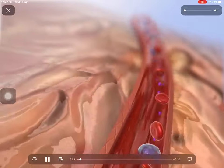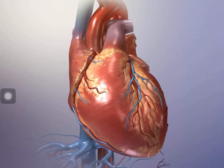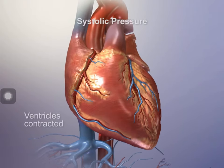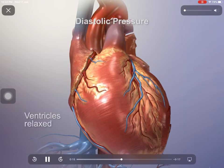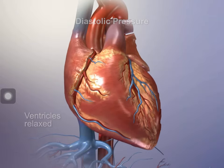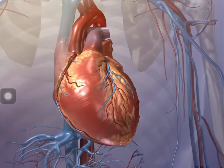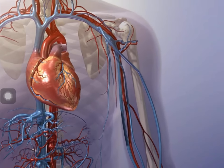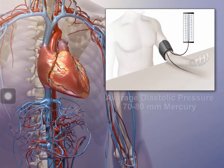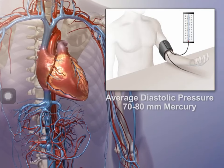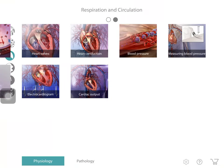Blood pressure is used as a measure of normal cardiovascular function. The point of highest pressure during ventricular contraction is called systolic pressure (average 120 mmHg). The point of lowest pressure when ventricles are relaxed is called diastolic pressure (average 70 to 80 mmHg). The instrument used to measure blood pressure is the sphygmomanometer.